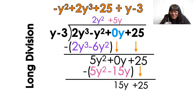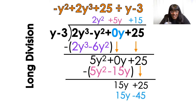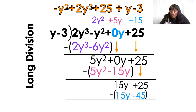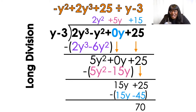Multiply that: 15 times y equals 15y, and 15 times negative 3 equals negative 45. Parentheses, subtract. 15 minus 15 cancels out. 25 minus negative 45 — minus minus turns into a plus — gives 70. Throwback to long division in fifth grade: 70 is what we call the remainder. You want to take the remainder and put it over the divisor, y minus 3. And you did it — you did your first long division example.